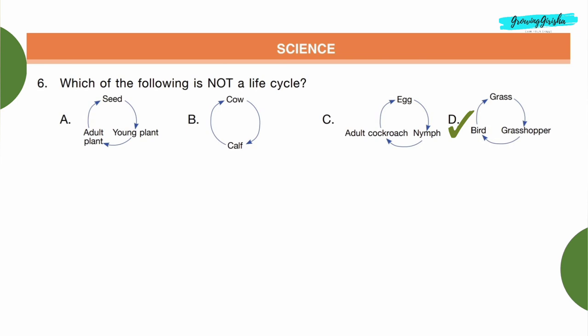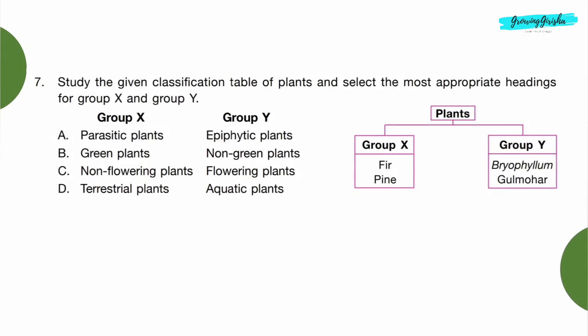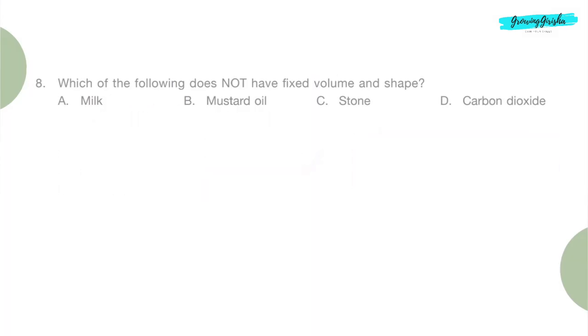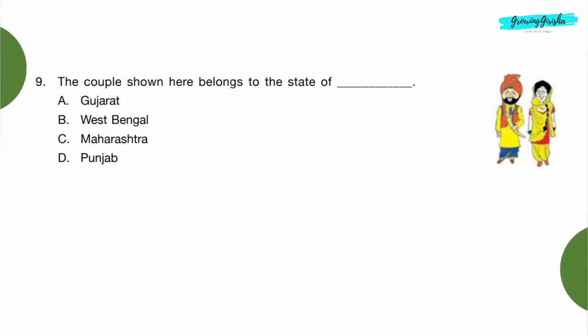Grass into grasshopper and then to bird, this is incorrect, so Option D is the correct answer. Question 7: Study the given classification table of plants and select the most appropriate headings for Group X and Group Y. Fir and pine are non-flowering plants, which is Group X, and bryophyllum or gulmohar are flowering plants, which is Group Y, so Option C is the correct answer. Question 8: Which of the following does not have fixed volume and shape? Option D: carbon dioxide, because gases do not have any fixed volume or fixed shape.